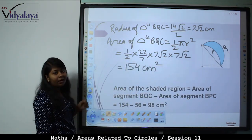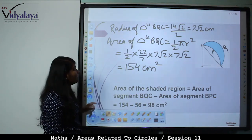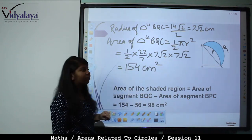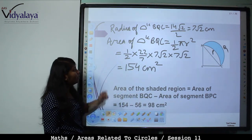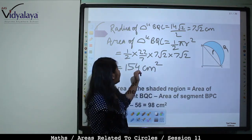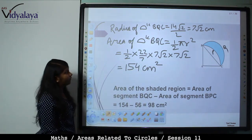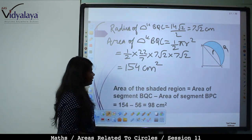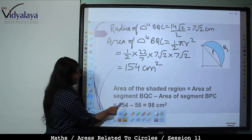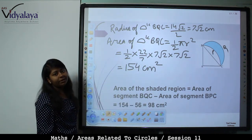Area of semicircle BQC = (1/2) × πr² = (1/2) × (22/7) × 7√2 × 7√2 = (1/2) × (22/7) × 98 = 154 cm², since √2 × √2 = 2. Area of shaded region = Area of segment BQC − Area of segment BPC = 154 − 56 = 98 cm².